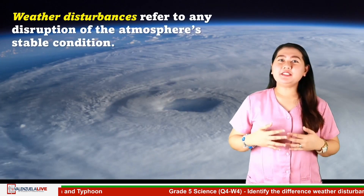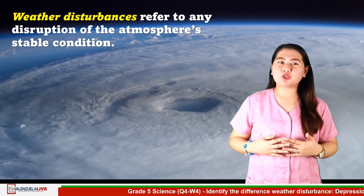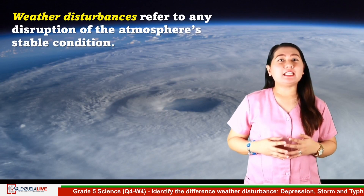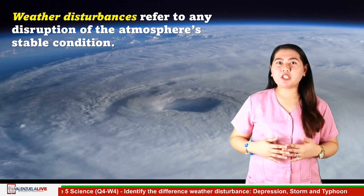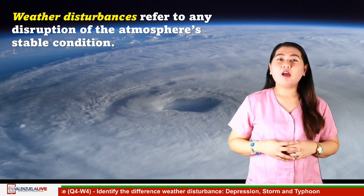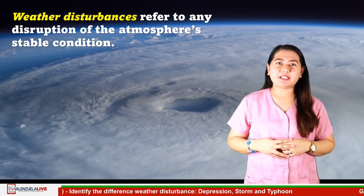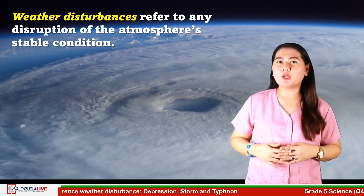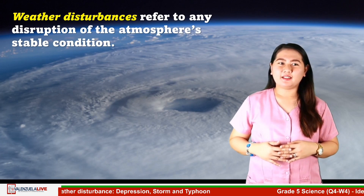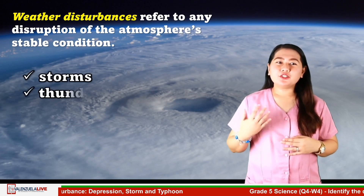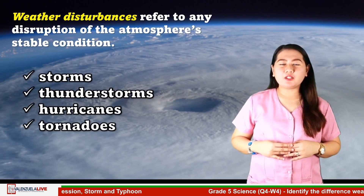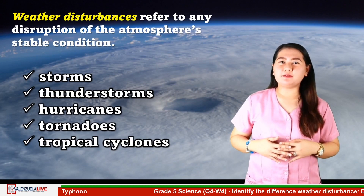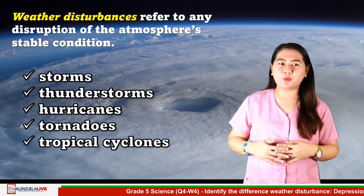Weather disturbances refer to any destruction of the atmosphere's stable condition. It can manifest through the formation of a low pressure area or different prevailing winds like monsoons and the Intertropical Convergence Zone or ITCZ. Storms, thunderstorms, hurricanes, tornadoes, and tropical cyclones are some weather disturbances happening around the world.